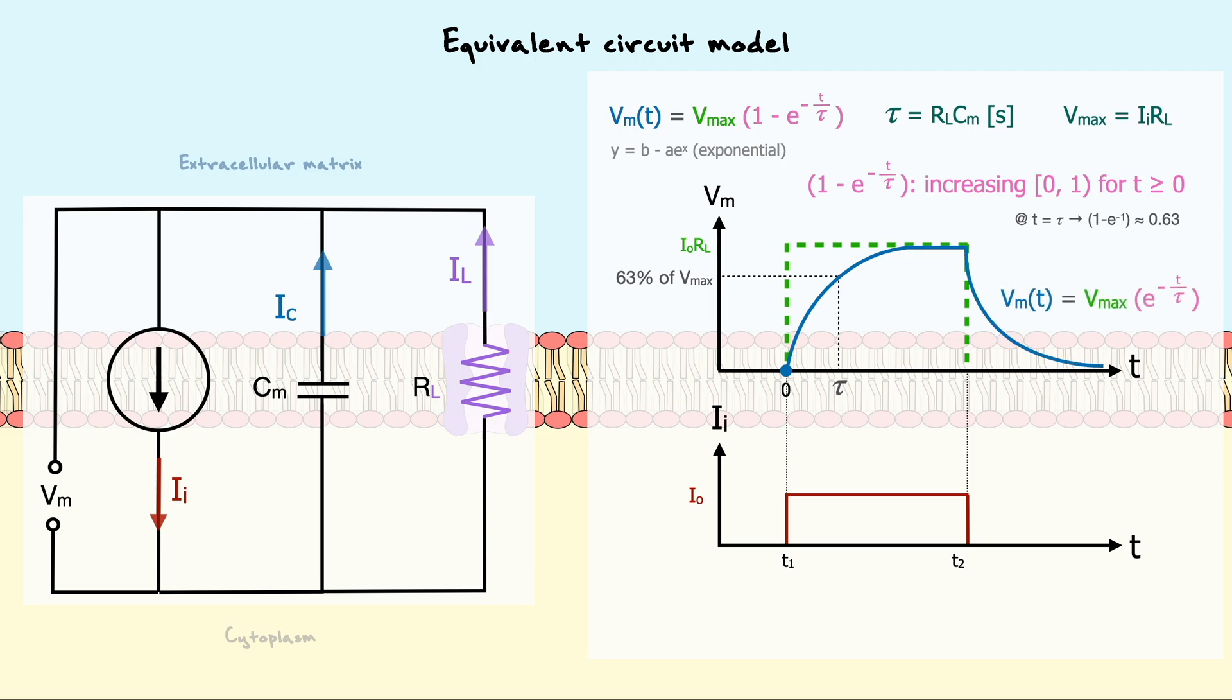When the current is turned off at T2, the membrane potential progressively returns to the baseline state according to a similar equation. The equation is a bit different because it describes an exponential decay instead of an exponential growth, but it still has the same essential components.